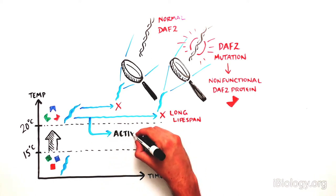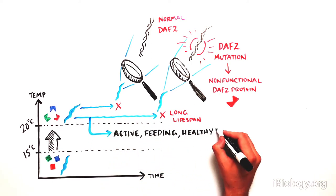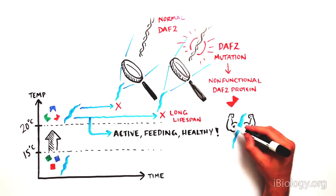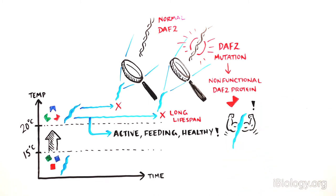The long-lived worms weren't just going in the nursing home and hanging on. They were living longer and healthier. They were still fertile, able to feed properly, and very active. They simply seemed to age more slowly.